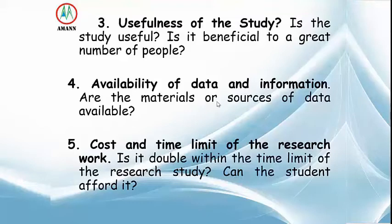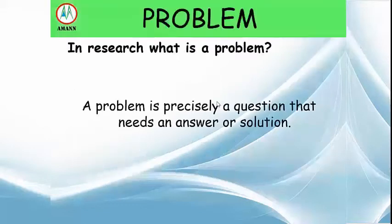Number four is availability of data and information — are the materials or sources of data available? Number five is cost and time limit of the research work — is it doable within the time limit of the research study? Can the student afford it?